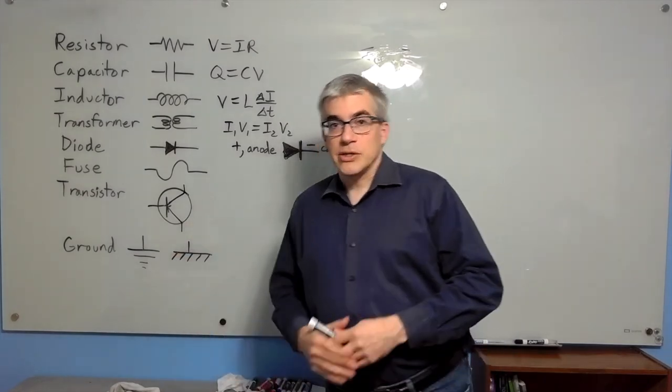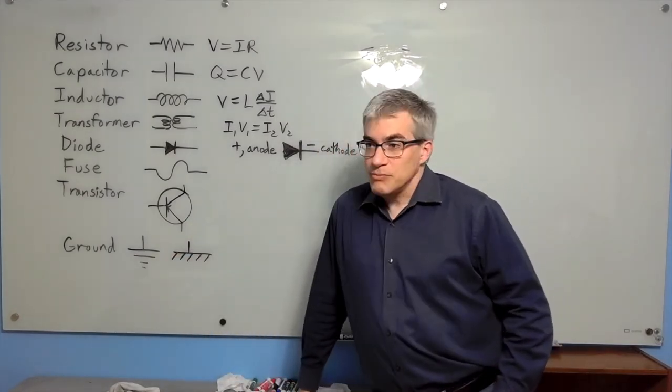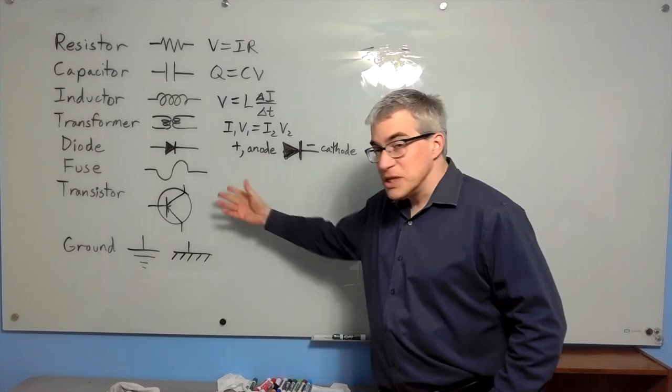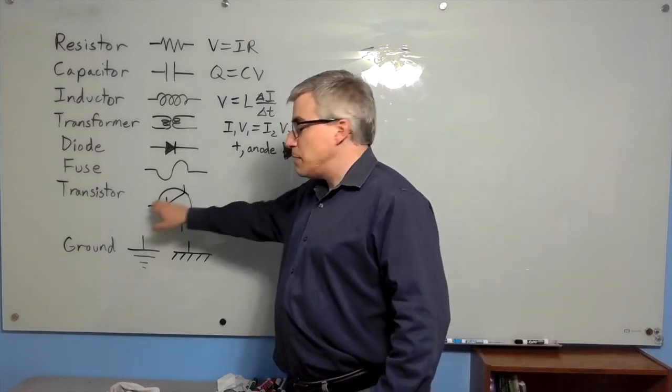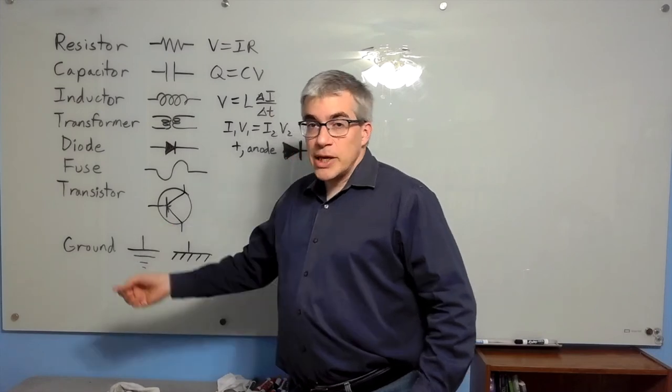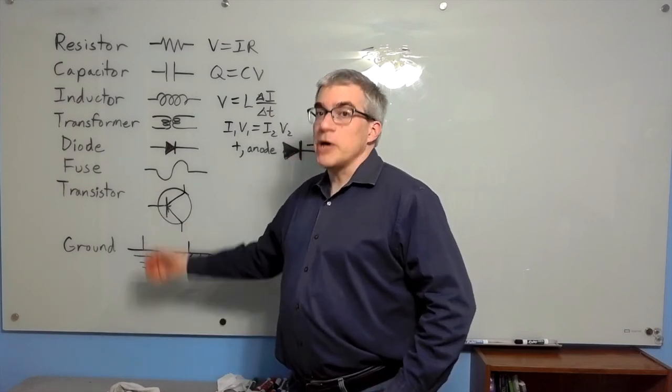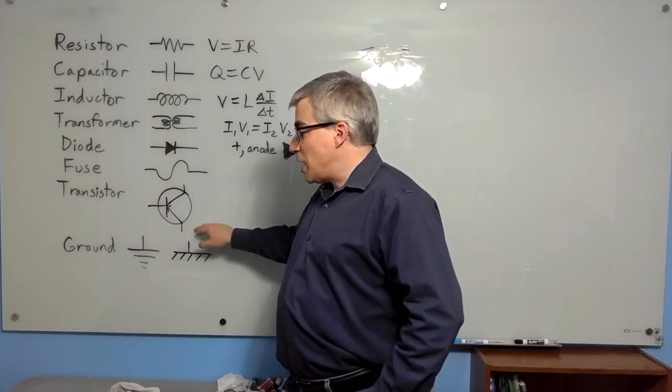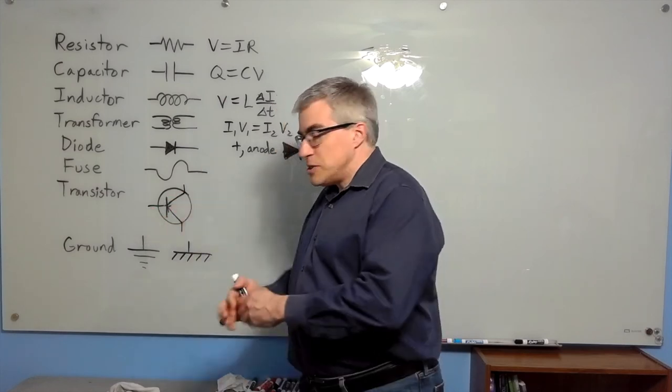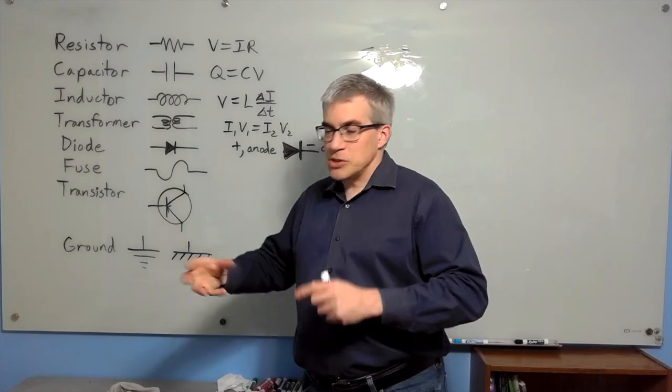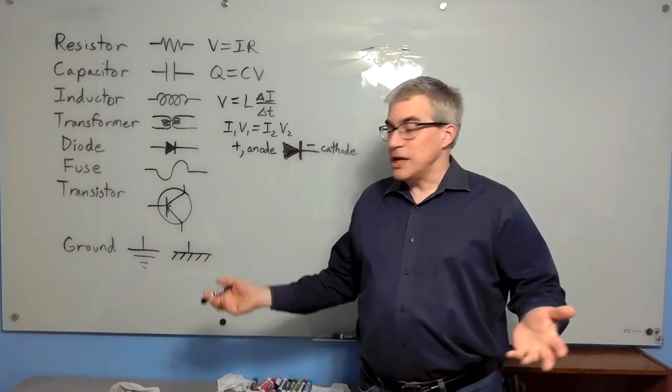The transistor, single most important device, all your computer chips are made out of millions of them. The transistor has an emitter, a collector, and a base. It's a switch that can be controlled by another switch. This will either conduct or not depending on what the voltage is here. So that means you can chain them together and have switches turn on switches turn on switches and enough of that you get a computer.